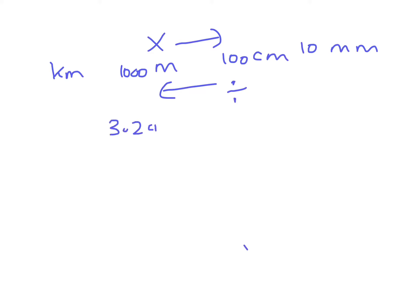So say I have 3.2 centimeters and I want to change that to millimeters. Then if you look at that, centimeters to millimeters, that would be 10. So times 10, you end up with 32 millimeters.